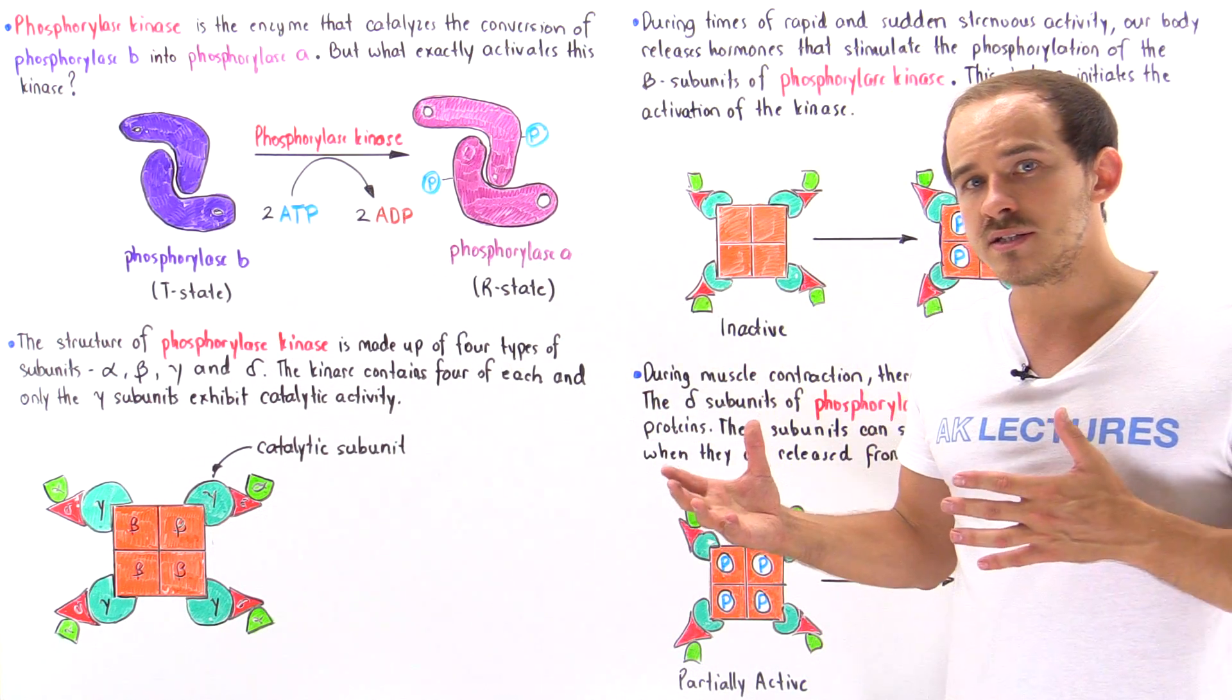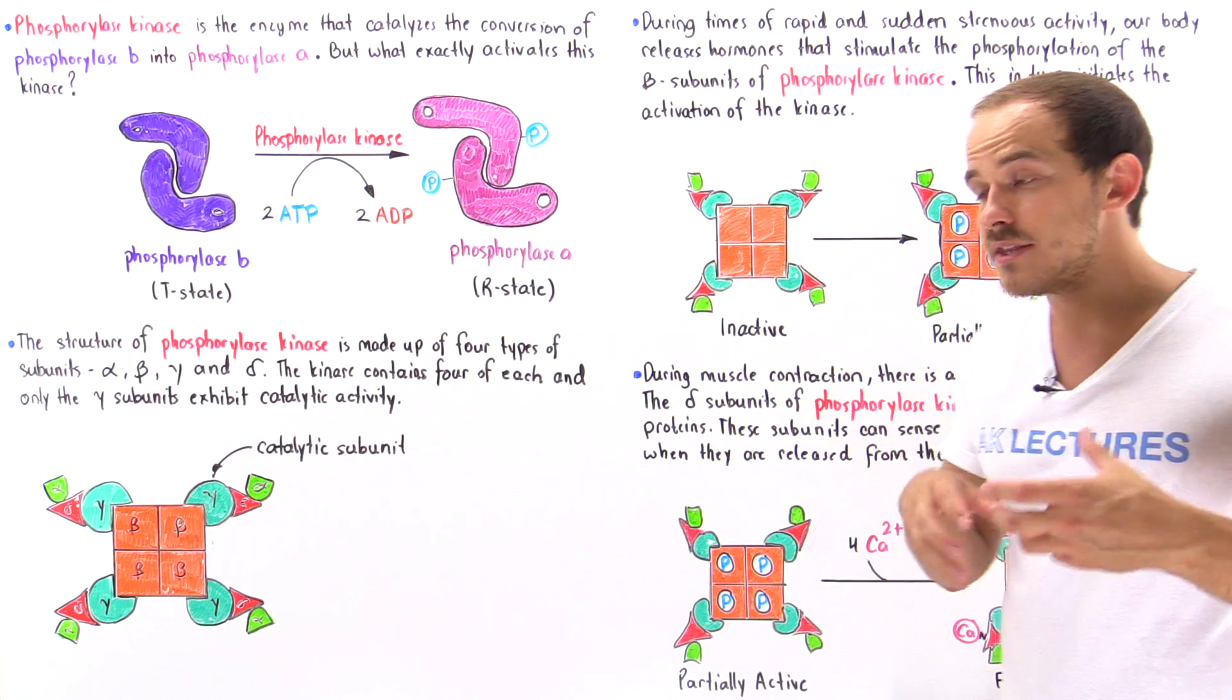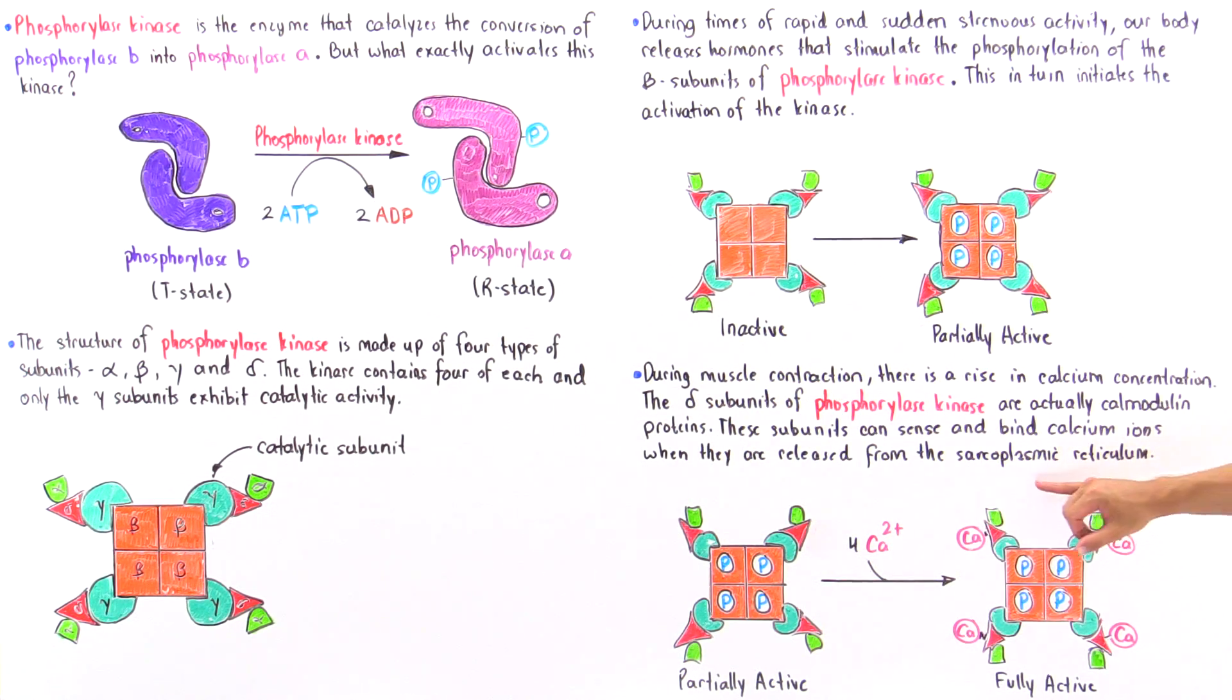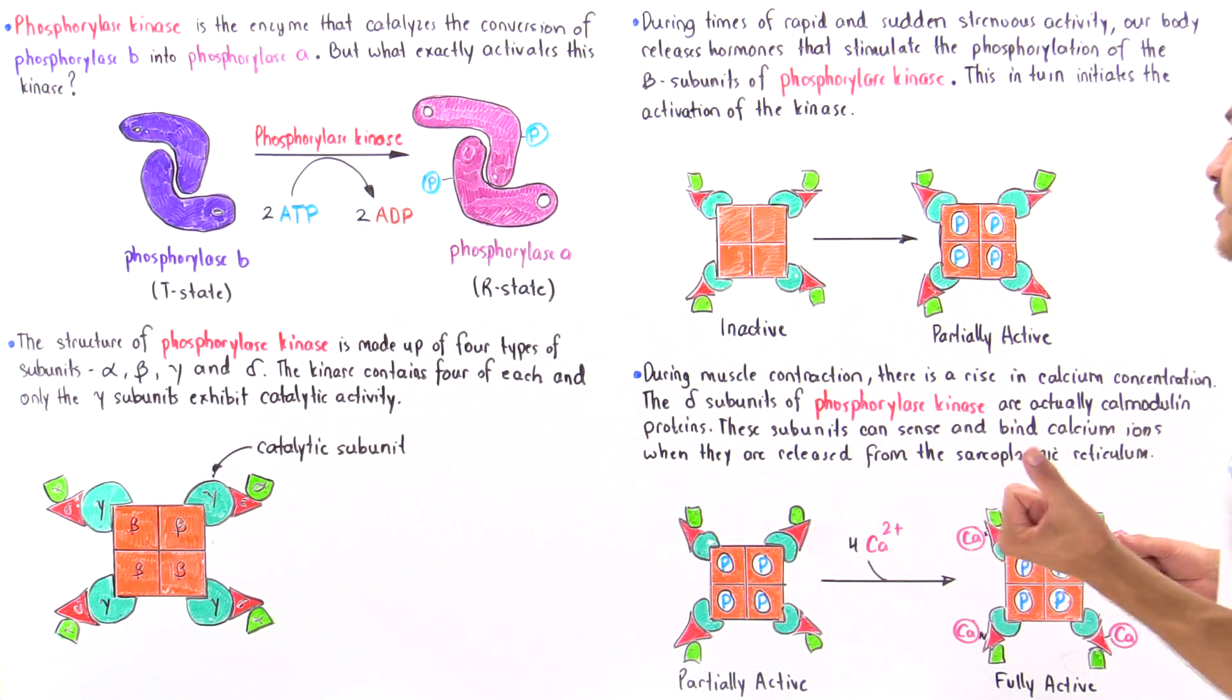So in skeletal muscle tissue, when we contract, the calcium ions stored in the sarcoplasmic reticulum is basically released into the cytoplasm. And once inside the cytoplasm, the calcium ions can basically bind onto these red structures.